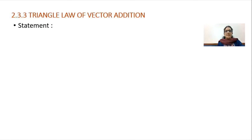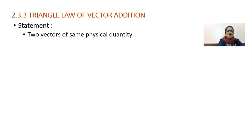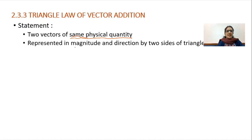We will see the statement of the triangle law point by point. The first important condition while adding two inclined vectors is that the two vectors should be of the same physical quantity — just as with parallel or anti-parallel addition. Velocity is added to velocity, force is added to force, and so on.